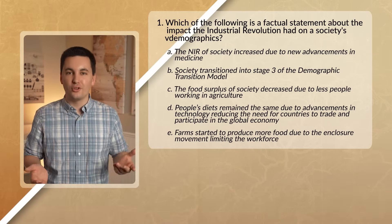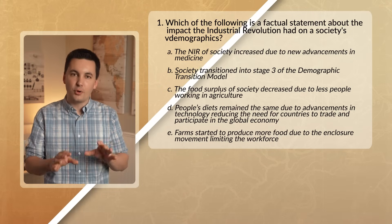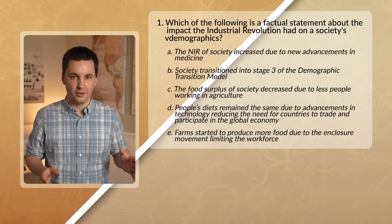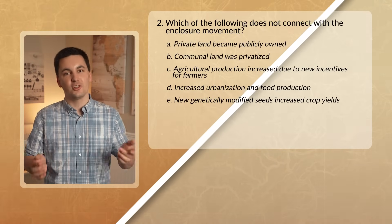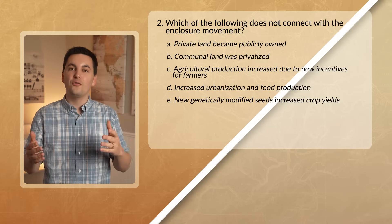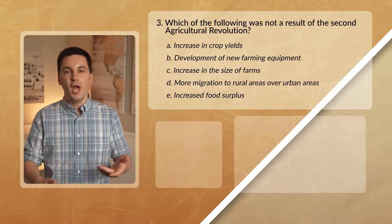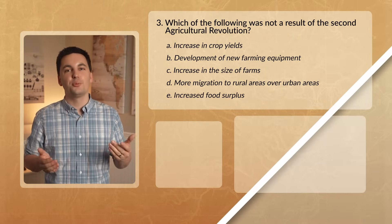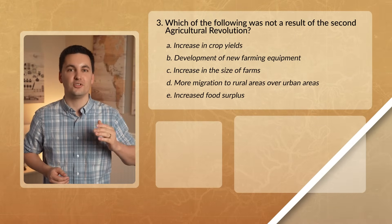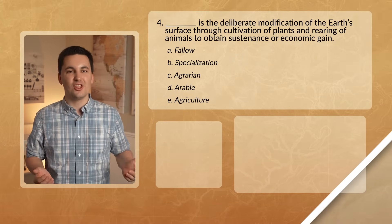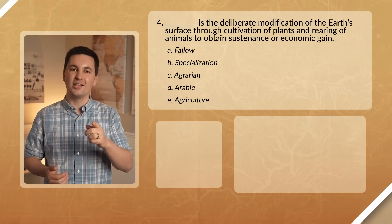All right, and there you have it. That was just a quick look at the second agricultural revolution. Now comes the time to practice what we've learned. Answer the questions on the screen, and when you're done, check your answers in the comment section down below. Also, if you found value in this video, don't forget to hit that subscribe button and check out my Ultimate Review Packet for more help with your AP Human Geography studies. As always, I'm Mr. Sin — thank you so much for watching, and I'll see you next time online.